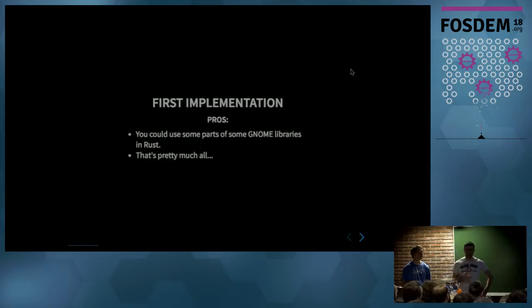So the first implementation was very simple. It was a one-to-one binding. So you had a function, an object. It was the same in Rust. Not much advantages, but you could use GTK in Rust.